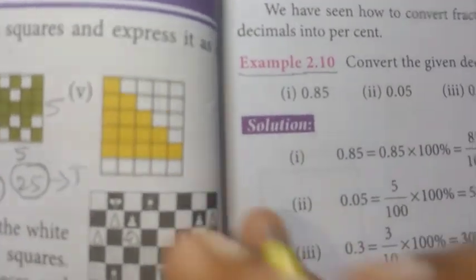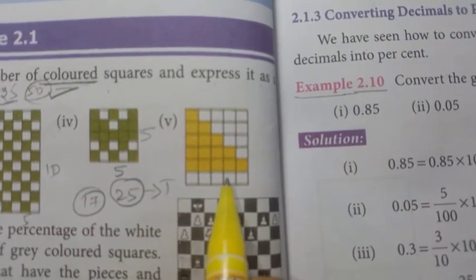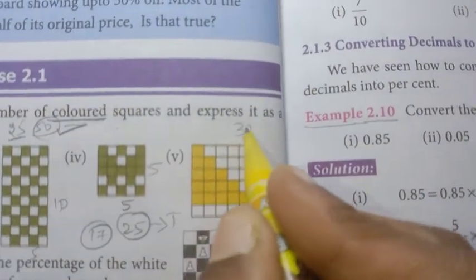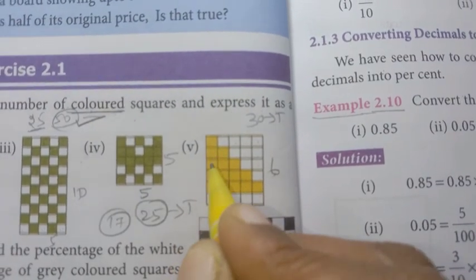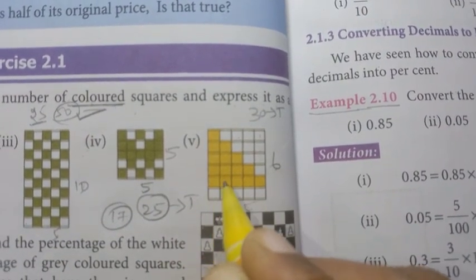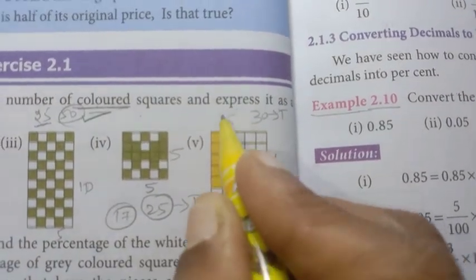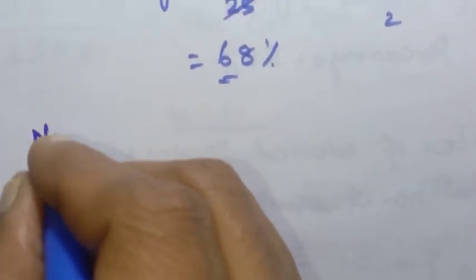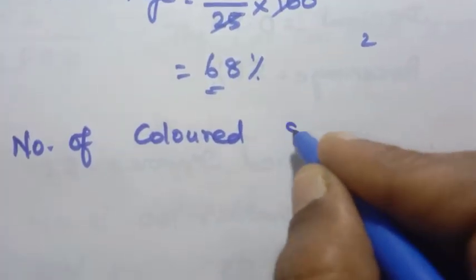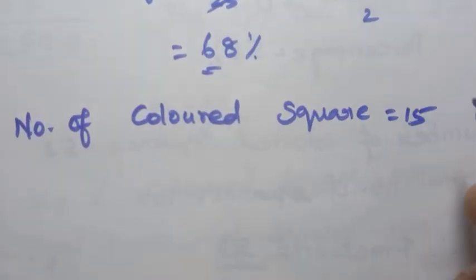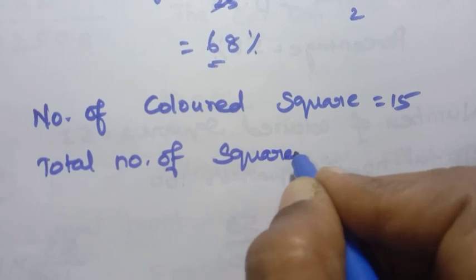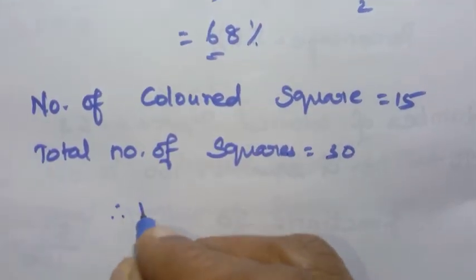Fifth grid: horizontal = 5, vertical = 6. So 5 × 6 = 30 total squares. Counting shaded squares: 1, 2, 3, 4, 5, 6, 7, 8, 9, 10, 11, 12, 13, 14, 15. Colored squares = 15, total = 30.